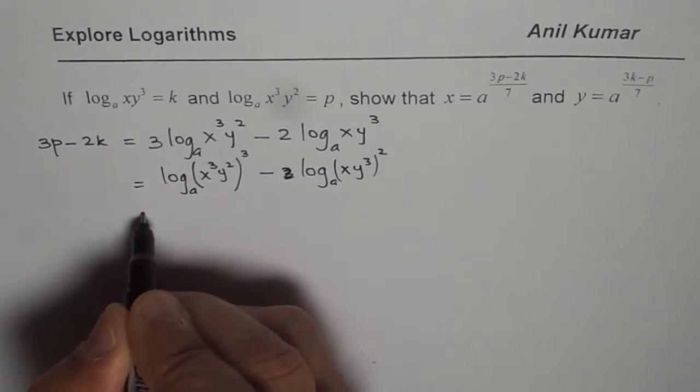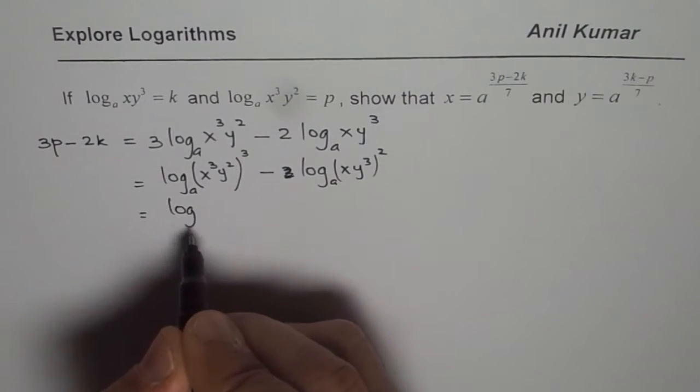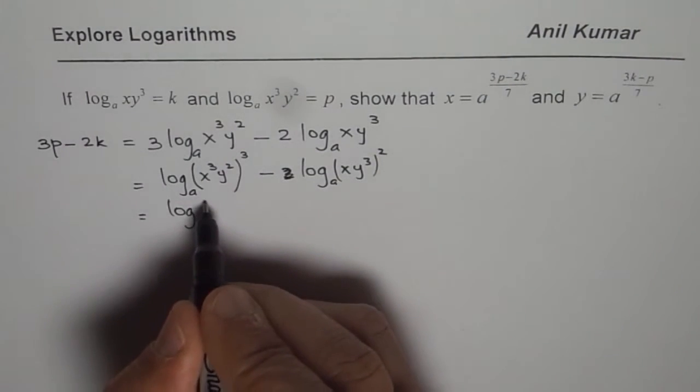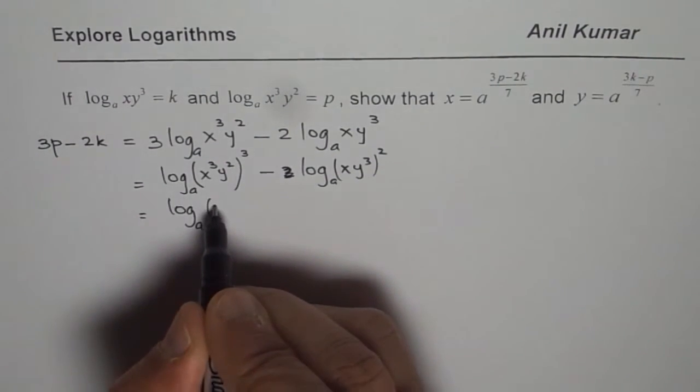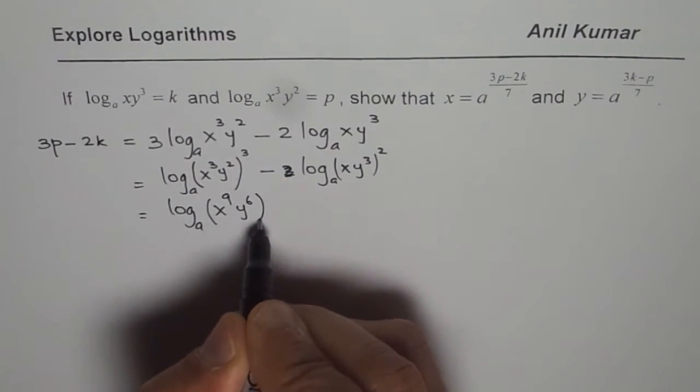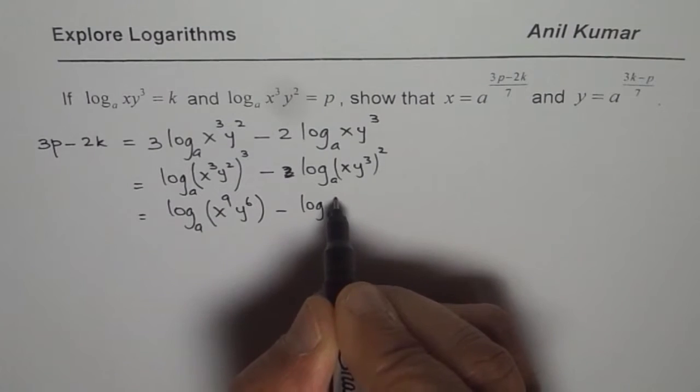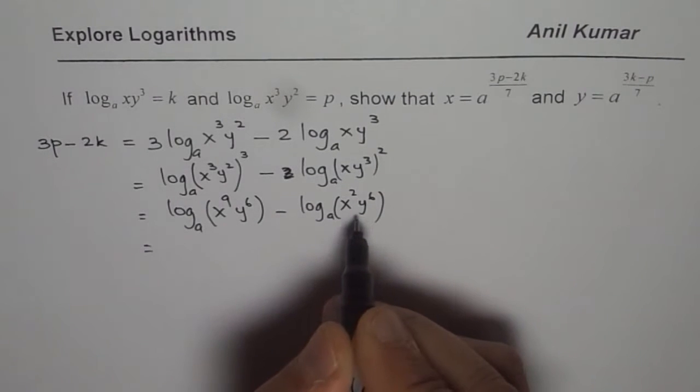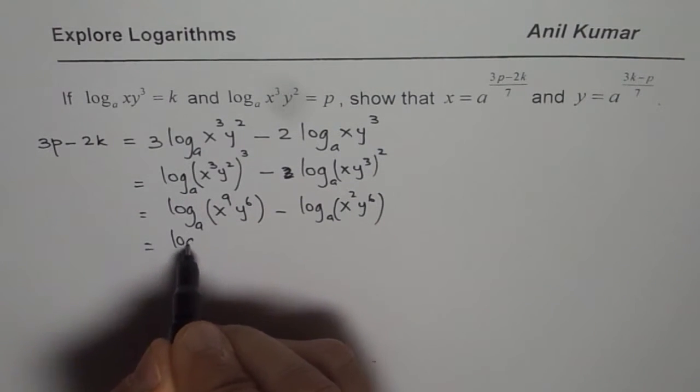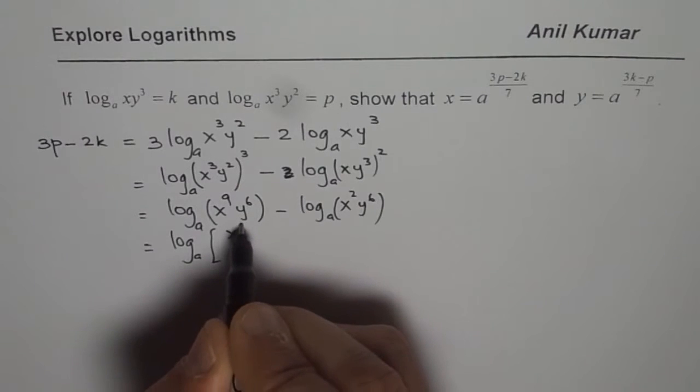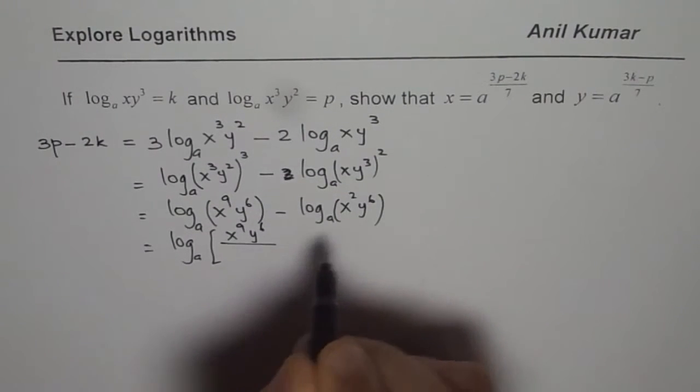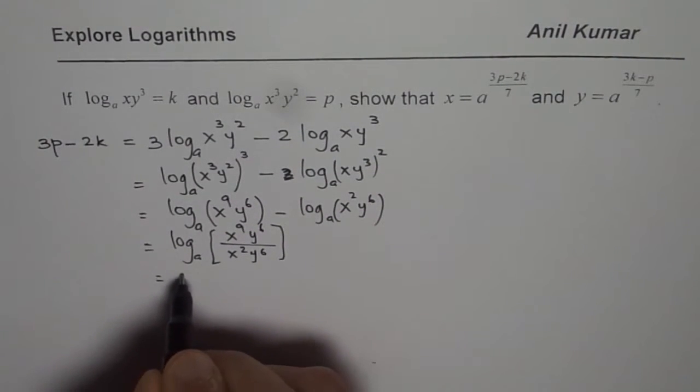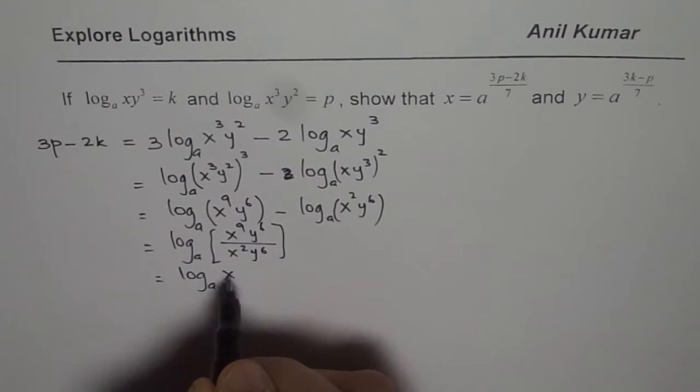Let us open this and then divide. So we get log of the numerator - this 3 times 3 is 9, y times 2 is 6 - minus log to the base A of x²y⁶. Now we can apply the quotient rule. We get log to the base A of x⁹y⁶ divided by x²y⁶. So this could be written as log to the base A of x⁷.